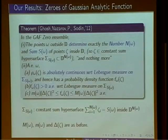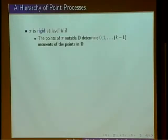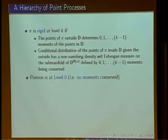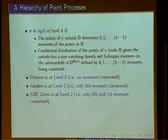A process is rigid at level k if the points outside determine moments from zero to k−1 but they don't determine anything more. So we said: Poisson is level zero, Ginibre is level one, and the Gaussian entire function zeros are a level-two process. One reason I wanted to present this is to challenge everyone here: find a natural level-three process or anything higher than two.